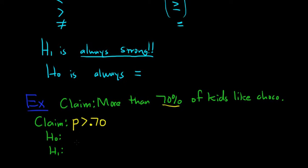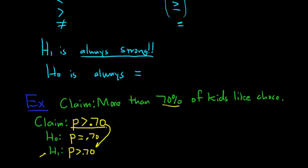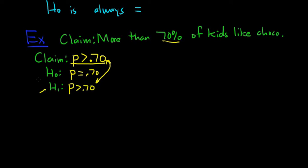So how do you figure out H1? Well, if the claim is strong, you keep it. The claim is strong, so it becomes H1: P > 0.70. And then H0 is always equals: P = 0.70. The strong survive — if the claim is strong, you keep it. If the claim is not strong, you flip it, and I'll show you later.